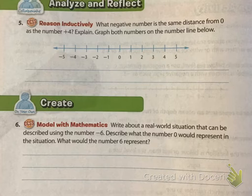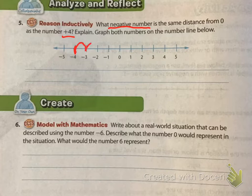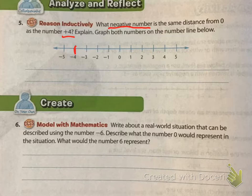What negative number is the same distance from zero as positive 4? Negative 4 — exactly. Because if we look, we do our hops: 1, 2, 3, 4 — that's 4 hops away from zero. And negative 4 is also 4 hops away from zero. What do we know about distance? The negative of the number is always equal — it's just the complete opposite. Distance is always positive.